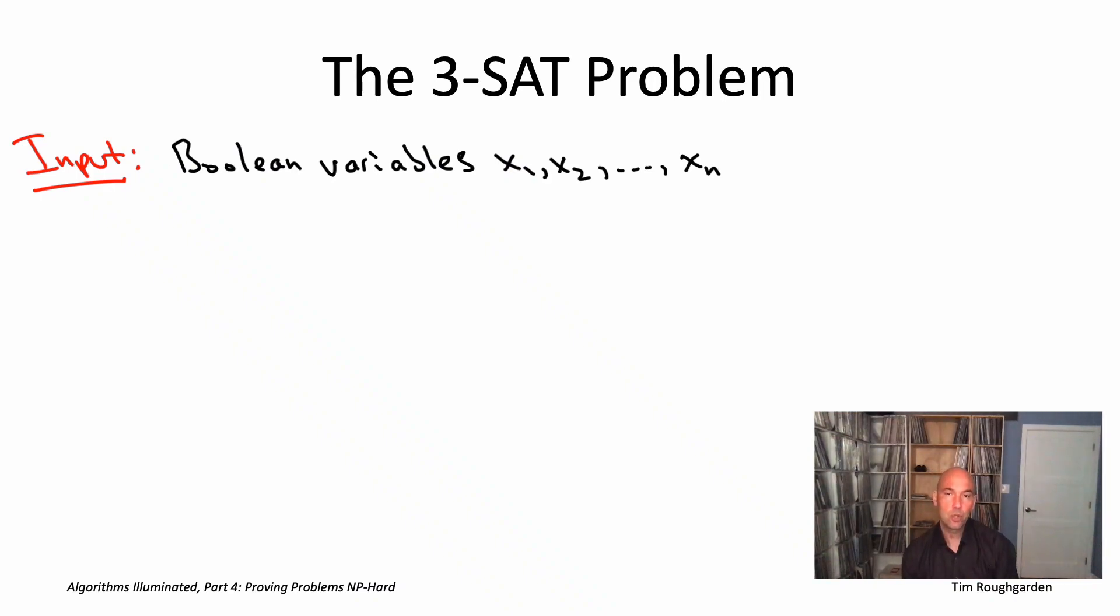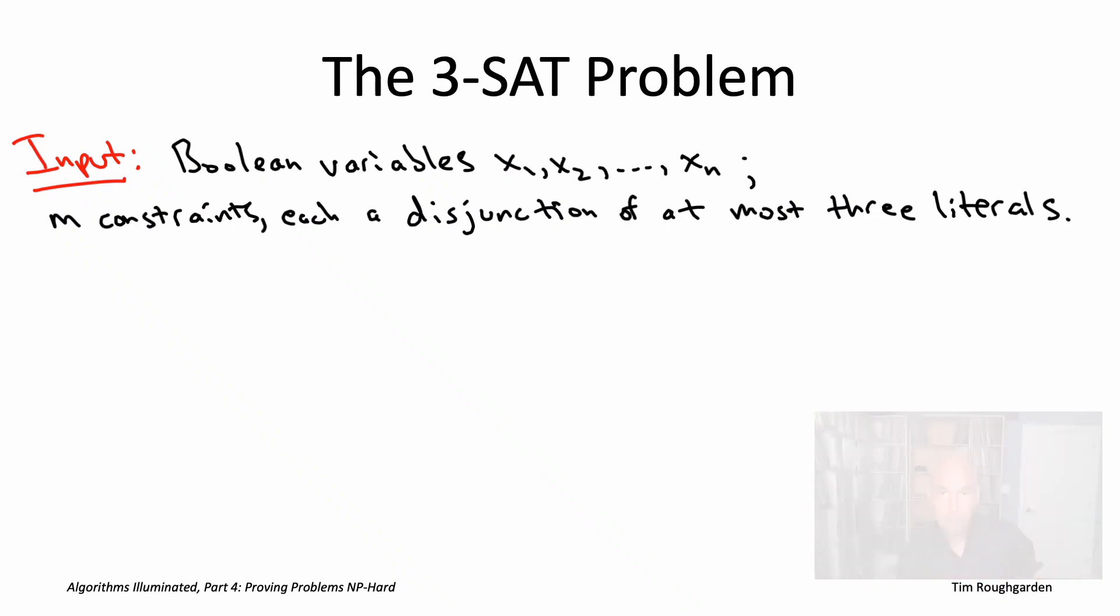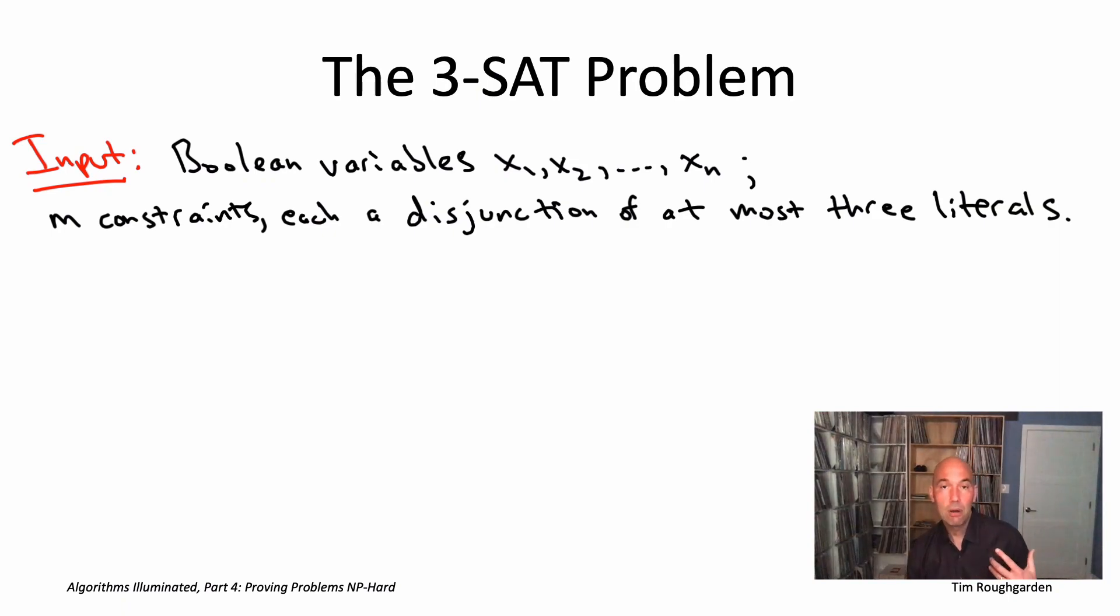If we're given a collection of n Boolean variables, there will be 2 to the n possible truth assignments. The only constraints we're going to bother with are disjunctions of literals. A literal is either a decision variable xi, or its negation, not xi. Disjunction just means logical or. So a or b is true if a is true, or if b is true, or if both a and b are true. When we were talking about SAT solvers, we allowed our disjunctions to have any number of literals. For the 3-SAT problem, it's the special case where we restrict each constraint to have at most three literals.